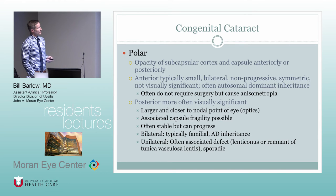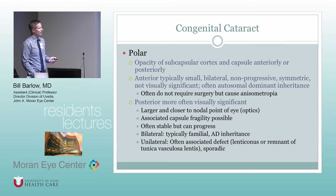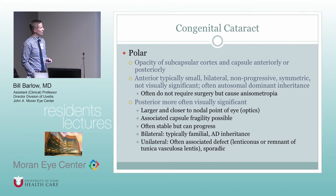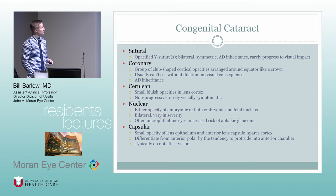Polar cataract is a focal opacity of the subcapsular cortex or capsule, anteriorly or posteriorly. Anterior polar cataracts are typically small, bilateral, and not typically visually significant — usually not requiring surgery, but they can cause anisometropia and associated amblyopia. Posterior polar cataracts are more commonly visually significant because they're closer to the nodal point. There's an important association with capsular fragility — greater risk of posterior capsular break during cataract surgery with a true posterior polar cataract. Cerulean cataracts are small bluish opacities in the lens cortex, not progressive and not typically visually symptomatic.